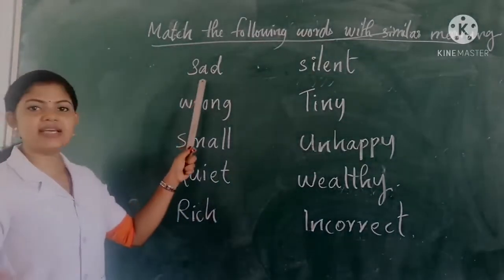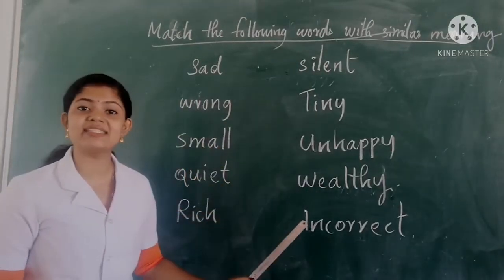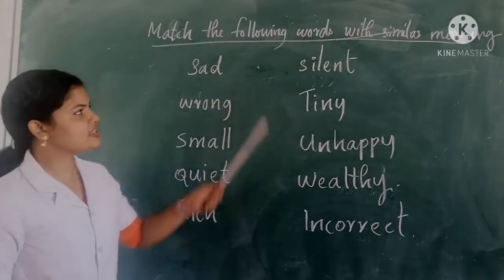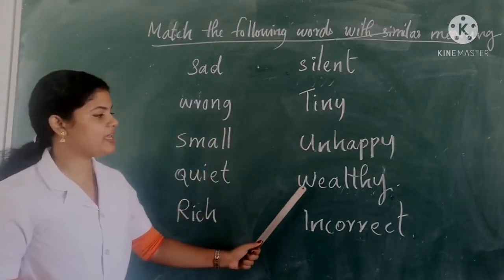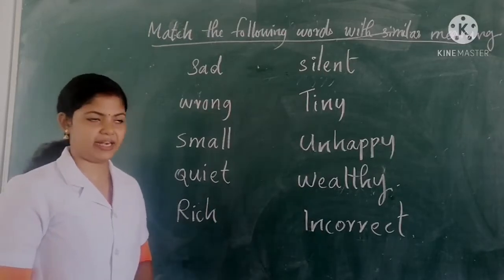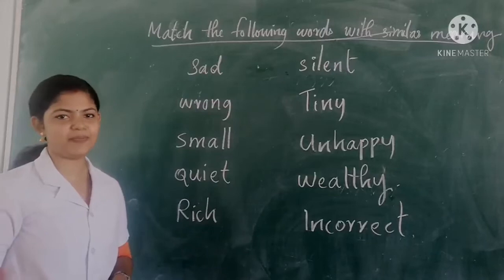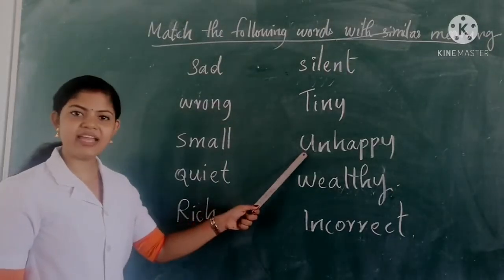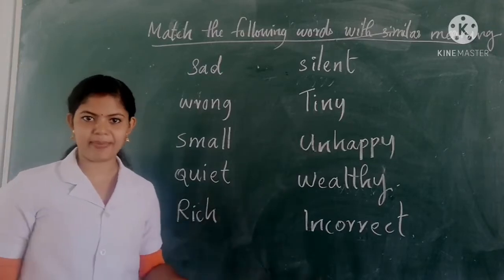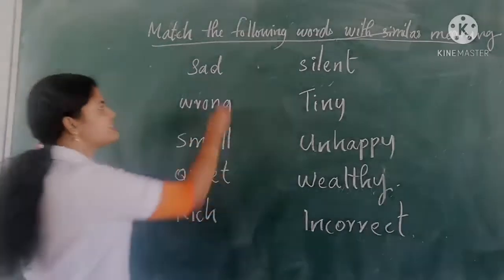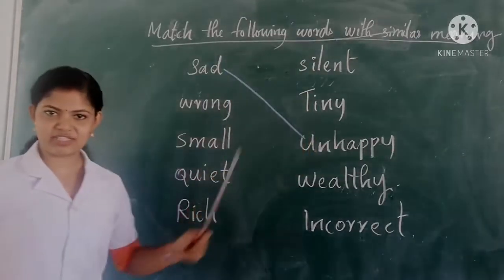The first word is sad. Can you see any other words which has similar meaning to sad? You can see some words here: silent, tiny, unhappy, wealthy and incorrect. Which word has similar meaning to sad? Yes, unhappy. Unhappy means someone who is not happy, which means sad. So we can match them together.